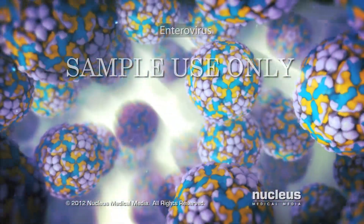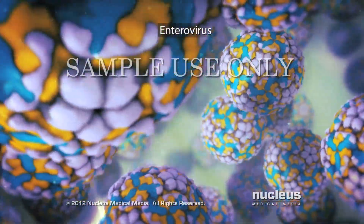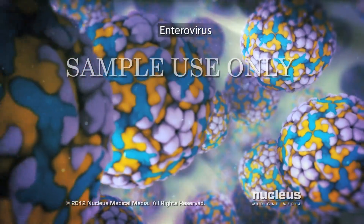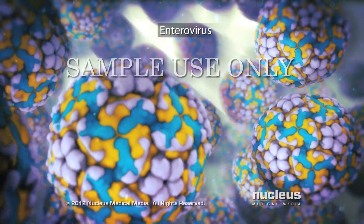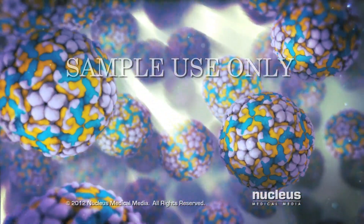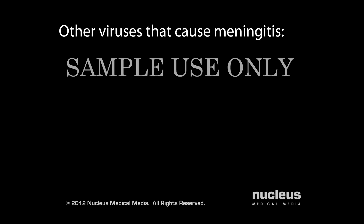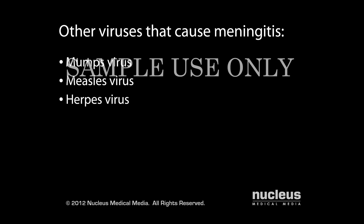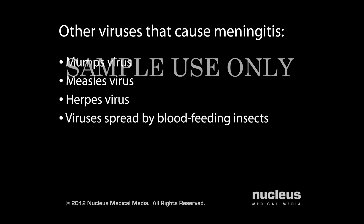The most common cause of viral meningitis is a type of virus called enterovirus. Other viruses that can cause meningitis include the mumps virus, the measles virus, herpes viruses, and a variety of viruses spread by blood-feeding insects, such as mosquitoes and ticks.